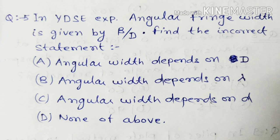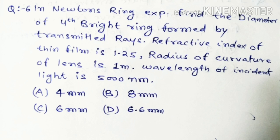Question five: in Young's double slit experiment, angular fringe width is given by beta divided by D. Find the incorrect statement. Options: angular width depends on D, angular width depends on lambda, angular width depends on small d, or none of the above. If your theory is clear, you will be able to find the correct answer.